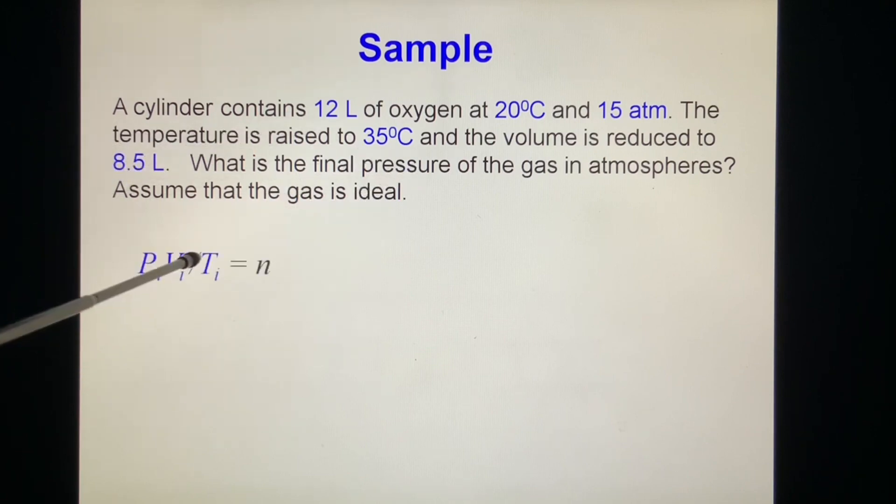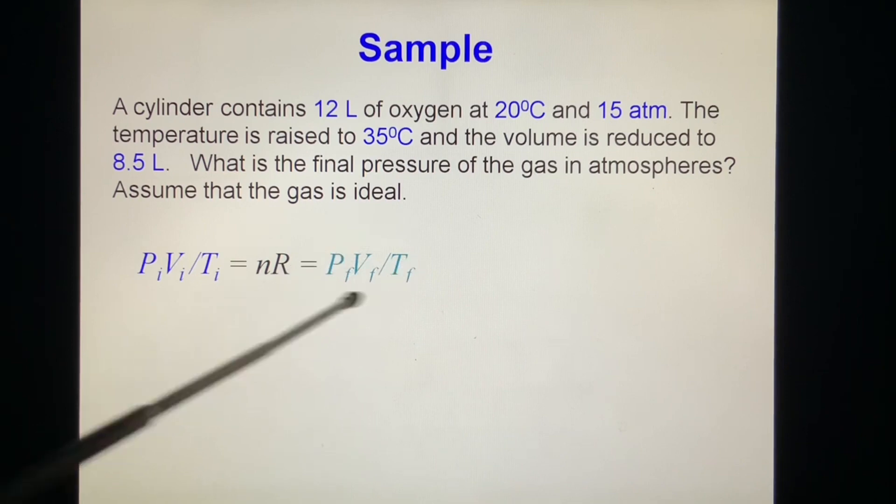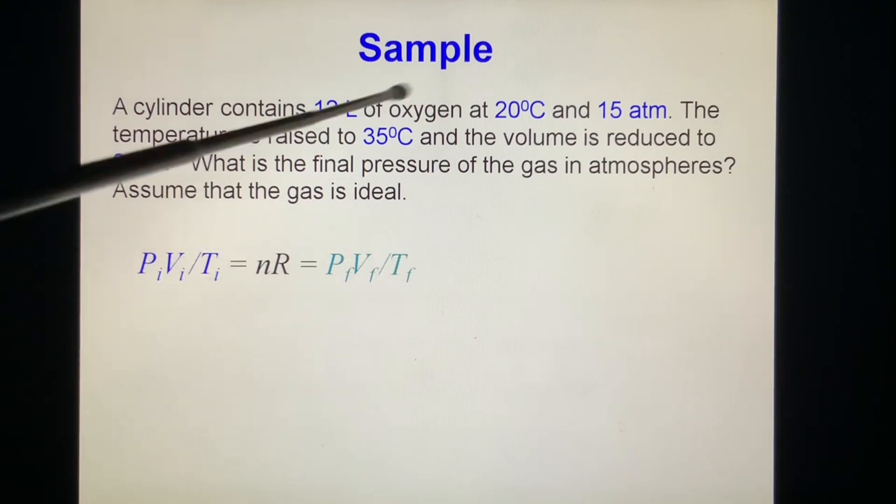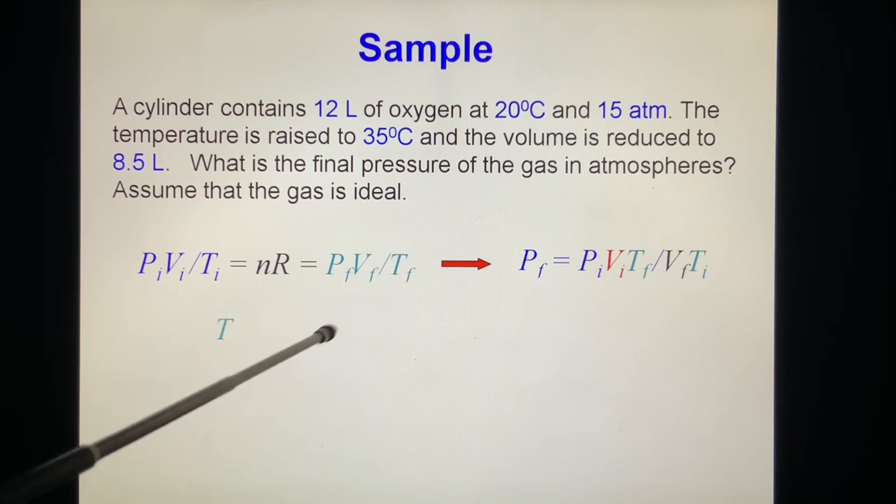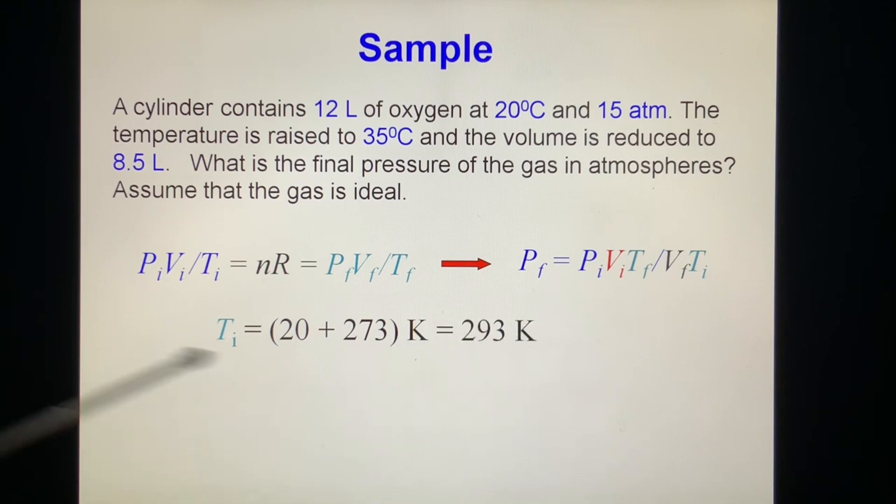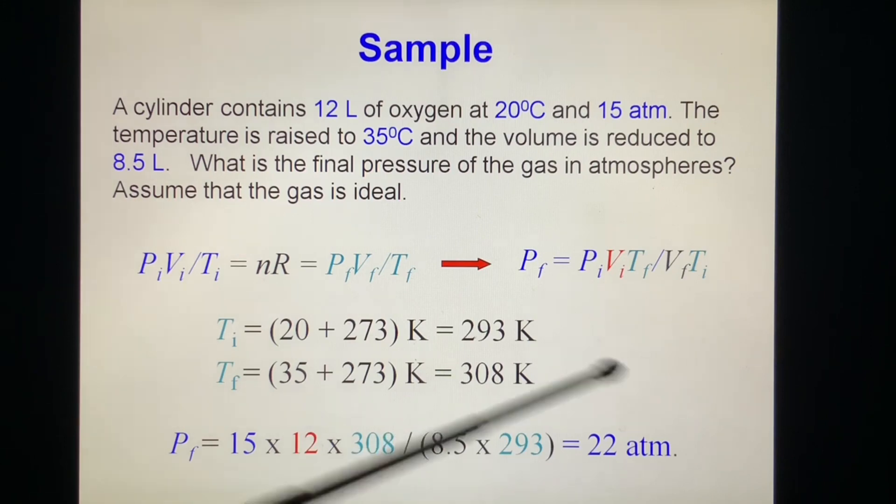We know PV over T equals nR. So Pi Vi over Ti equals nR. And also, P final V final over T final equals nR. This is constant. We know everything: six numbers, one, two, three, four, five. We can find another one. The only thing we have to pay attention to is the temperature, it should be in Kelvin. So Ti equals 20 plus 273 Kelvin. T final is 35 plus 273 Kelvin. We put these numbers in, we get P final very easily. It's about 22 atmospheres.